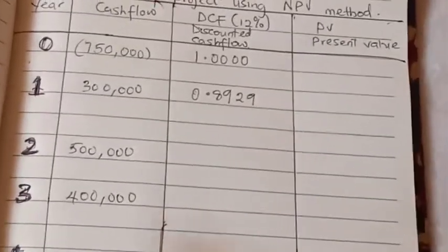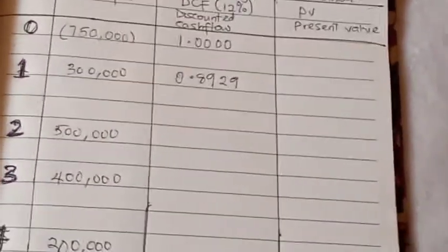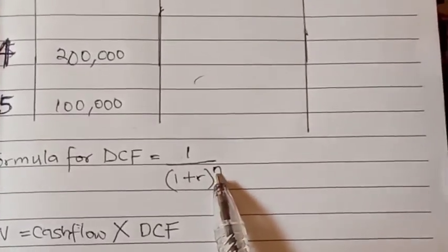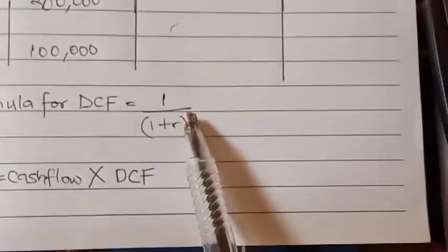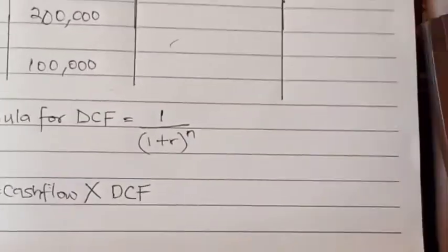The next one is for year 2. For the 500,000 cash flow we'll still do the same thing. The only difference is that n will no longer be 1 but 2. So you have to do this yourself and fill it up.